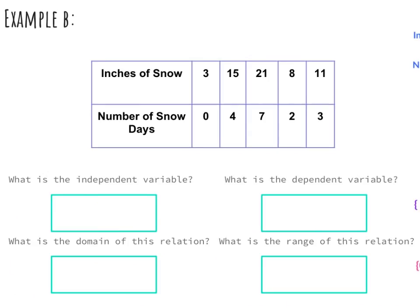Now let's move on to Example B. We have a graph showing inches of snow and the number of days out of school. We need to identify the independent and dependent variables. When we're talking about independent and dependent variables, we want words. The inches of snow is going to affect the number of days out of school — not the other way around. So our independent variable is inches of snow, and our dependent variable is number of days out of school.